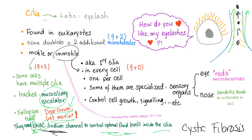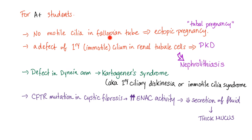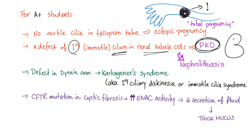Immotile cilia, also known as primary cilia, are present in every single cell but only one per cell. Some are specialized — for example, the eyes have rods or photoreceptors, which are a specialized type of cilia; the nose has the dendritic knob of the olfactory nerve (first cranial nerve), also a specialized type of cilia. Problems with motile cilia in the fallopian tube can lead to ectopic pregnancy — specifically tubal pregnancy — which can be fatal. Defects in primary cilia in renal tubule cells can lead to polycystic kidney disease or kidney stones (nephrolithiasis).